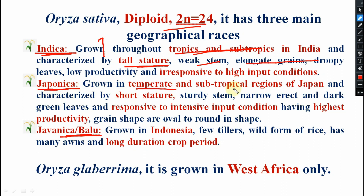Next is japonica, grown in temperate and subtropical regions of Japan. Here a short structure will be there, sturdy stem, narrow erect and dark green leaves, responsive to intensive input conditions - if you apply more, definitely the return will be more. Japonica has the highest productivity. This question may come: among these three Oryza sativa races, which one has the highest productivity? That is japonica. Grain shape is oval to round.